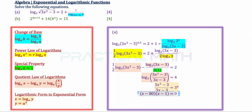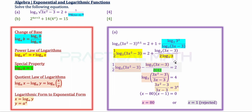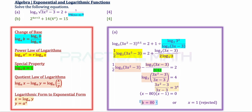Solving the factorized form gives x equals 80 or x equals 1. We reject x equals 1 because substituting it into the original equation gives log 0 to the base of 3, which is a math error — you cannot take the log of 0. So the only answer for part A is x equals 80.